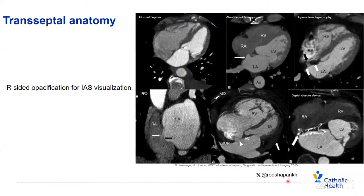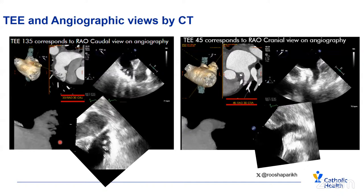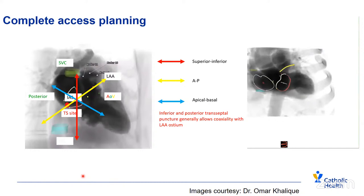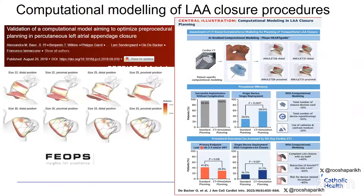CT can replicate very well what we see on TEE, as shown in these TE and angiographic views by CT. A slide shared by Dr. Omar Khaliq shows complete access planning that can be done using angiographic representation created from cardiac CT. We can define planes anatomically, assess superior, inferior, AP, apical, basal, planar, and transeptal orientations, and determine the coaxiality of our catheters to get into the LAA ostium and how to implant the device.